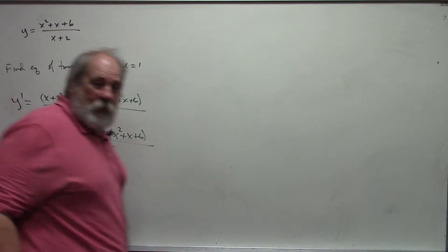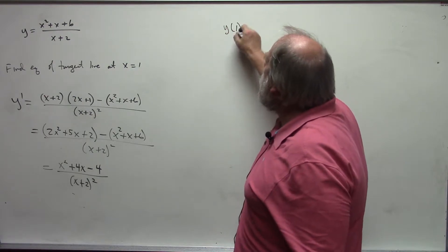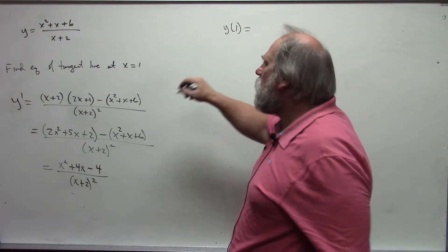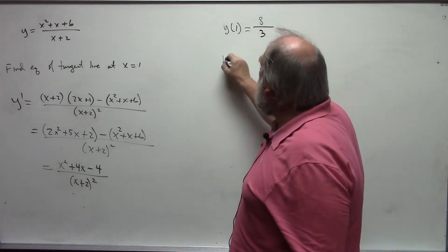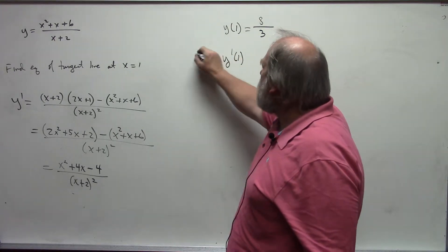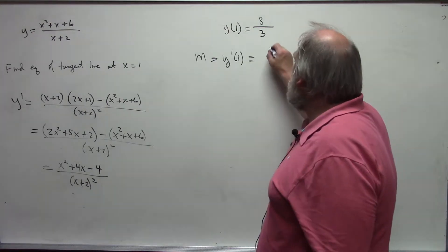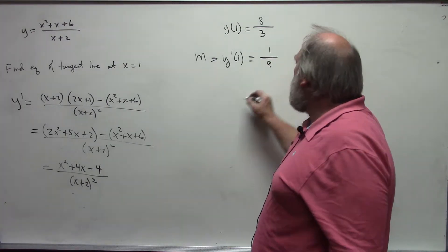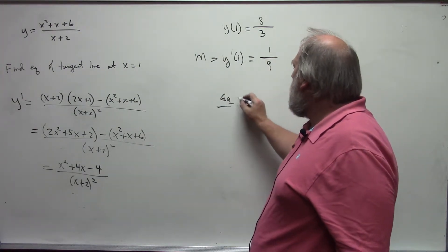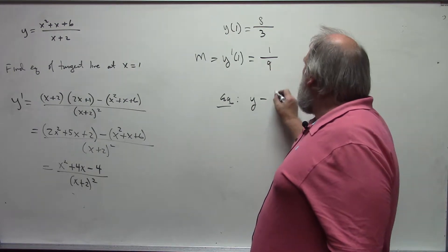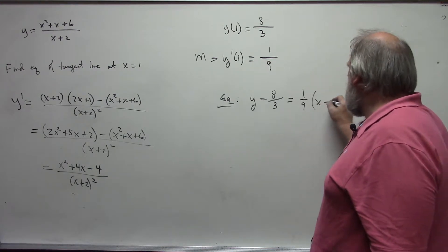So I get x squared plus 4x minus 4 over x plus 2 quantity squared. So then, for the equation of the tangent line, I need the functional value at 1. y at 1 is going to be 1 plus 1 plus 6, which is 8, over 3, and my derivative at 1, because that is my slope. And that is 1 plus 4 minus 4, which is 1, over 3 squared, which is 9.